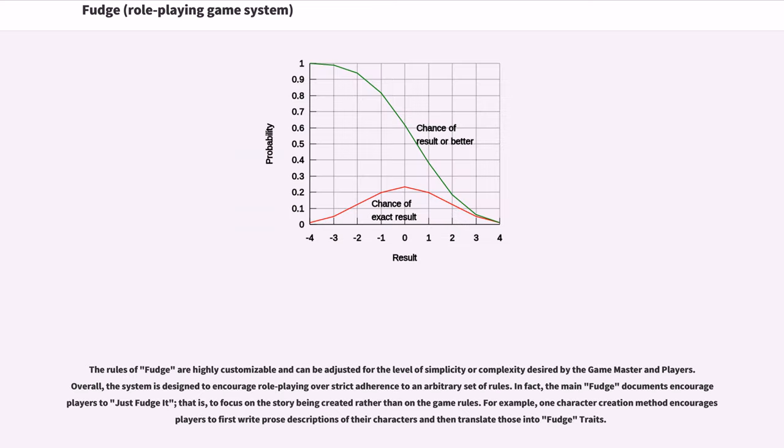The rules of Fudge are highly customizable and can be adjusted for the level of simplicity or complexity desired by the game master and players. Overall, the system is designed to encourage role-playing over strict adherence to an arbitrary set of rules. In fact, the main Fudge documents encourage players to just Fudge it, that is, to focus on the story being created rather than on the game rules. For example, one character creation method encourages players to first write prose descriptions of their characters and then translate those into Fudge traits.